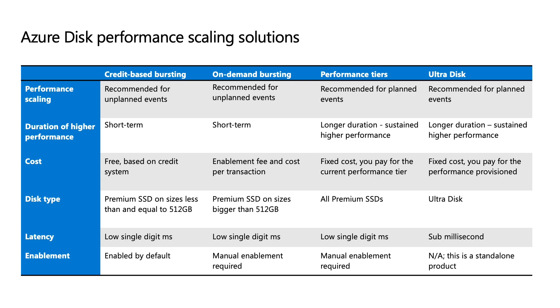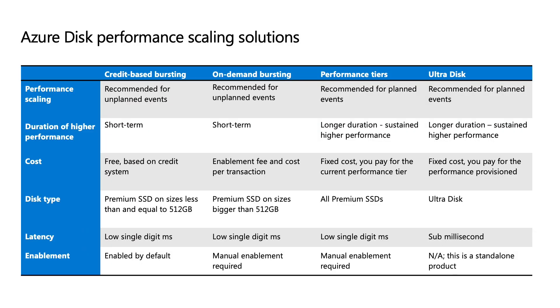On top of this, we have additional performance capabilities. Depending on the performance nature of your workload, you can take advantage of them to optimize costs while still meeting performance needs. For example, we have credit-based bursting, which is for scenarios where your workload may spike unexpectedly for short periods of time. This allows you to provision for your average performance rather than peak performance. On your average performance scenario, you accumulate credits, and when you need to burst unexpectedly, you can consume these credits for 30 minutes at a time.